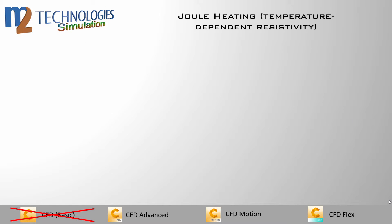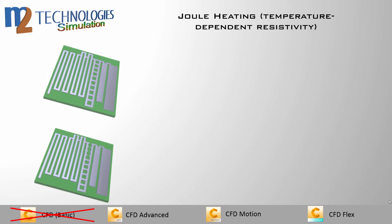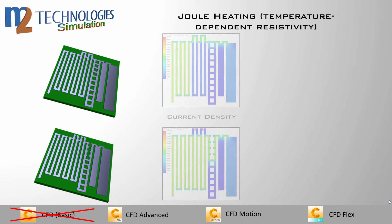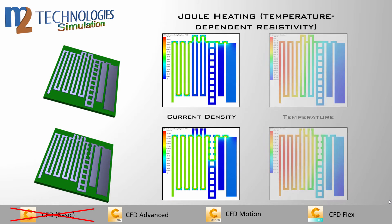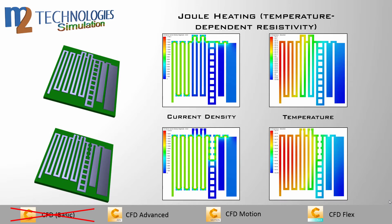Joule heating is the generation of heat by passing an electric current through a metal. Also known as resistance heating, this function simulates heating due to electrical resistance. Examples include stovetop burner elements and space heaters. The primary inputs are current, voltage, and the material resistivity. Outputs include current density, ohmic loss, and temperature.